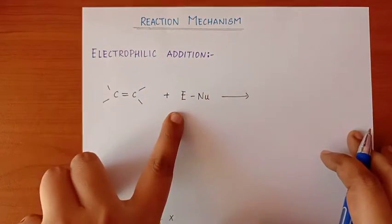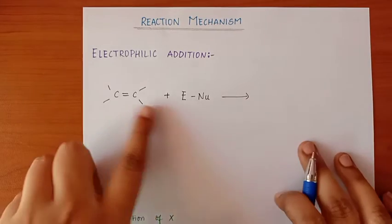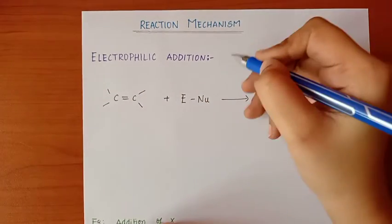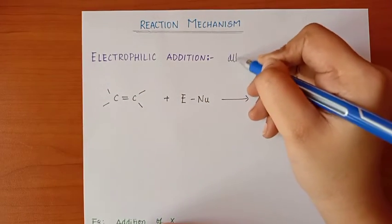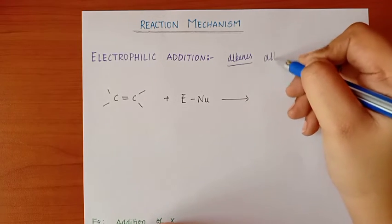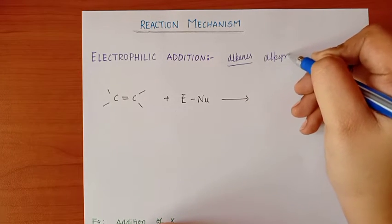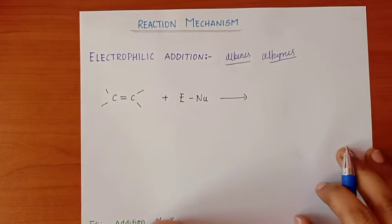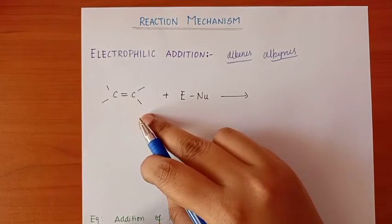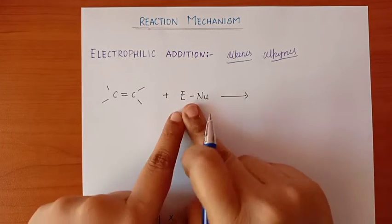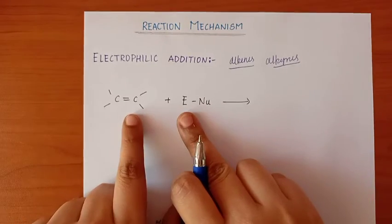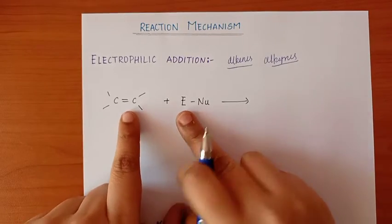If you look at these reactions, one of the main subjects is Alkenes — double bond hydrocarbons — and Alkynes. These are the main compounds involved in Electrophilic Addition reactions. Here are the Alkenes, and here are the nucleophiles and electrophiles.